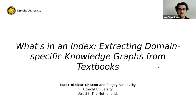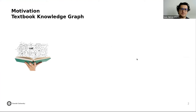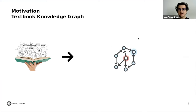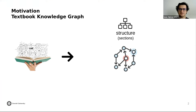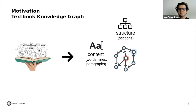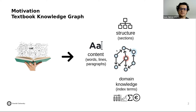My name is Isaac and I'm going to present 'What's in an Index: Extracting Domain-Specific Knowledge Graphs from Textbooks.' In my previous work, I have used textbooks to construct knowledge graphs representing information about the structure of the textbooks — the sections and subsections — also information about the content: words, lines, and paragraphs for each section. We can also represent information about the domain, and for this we use the index terms that are part of the textbook.